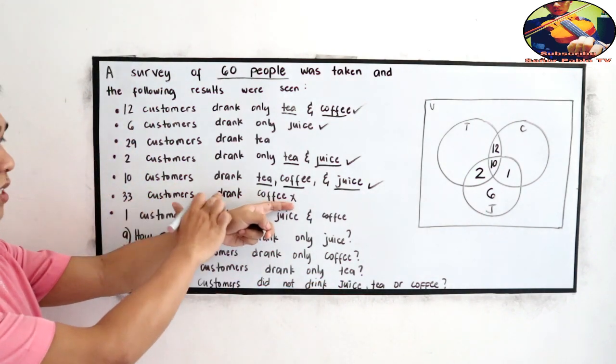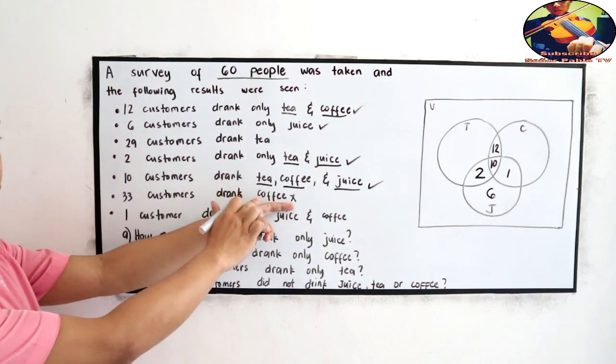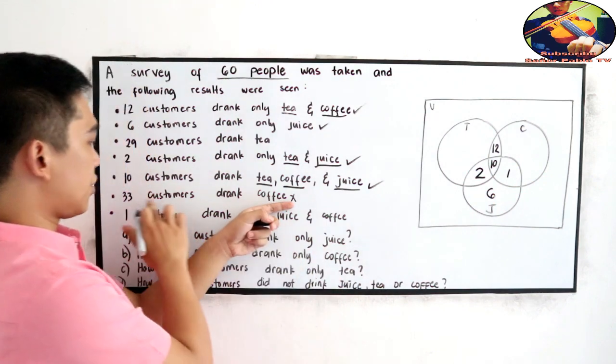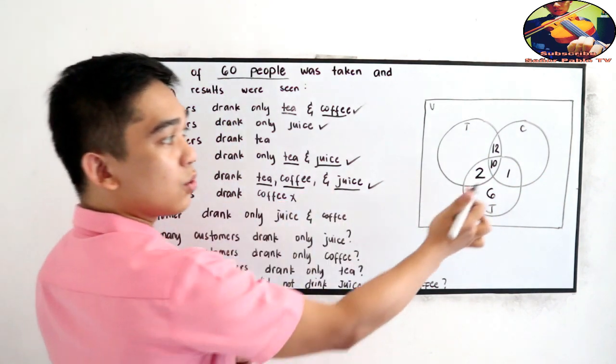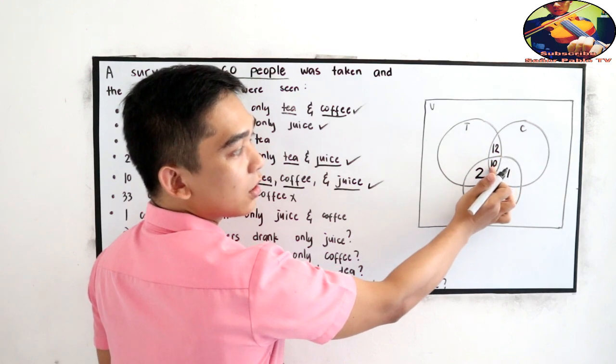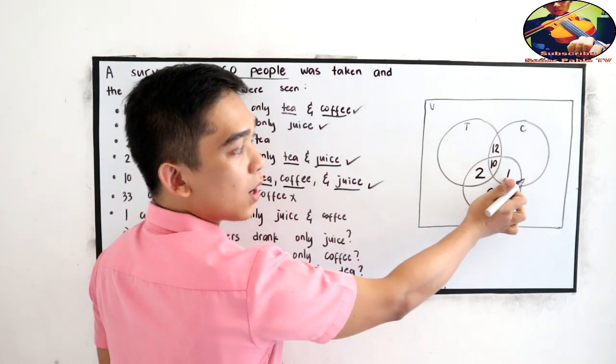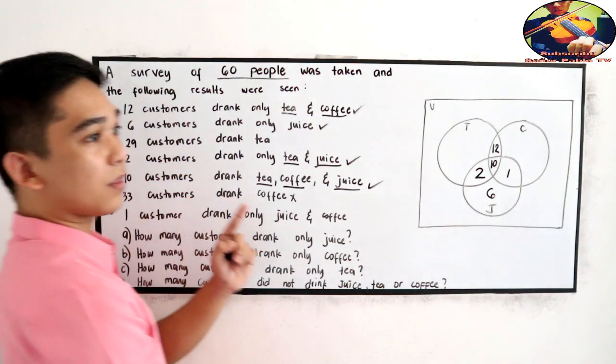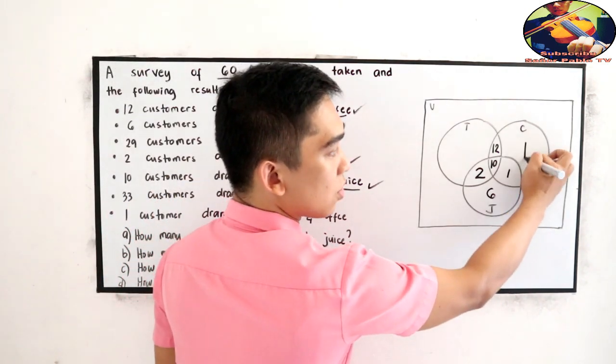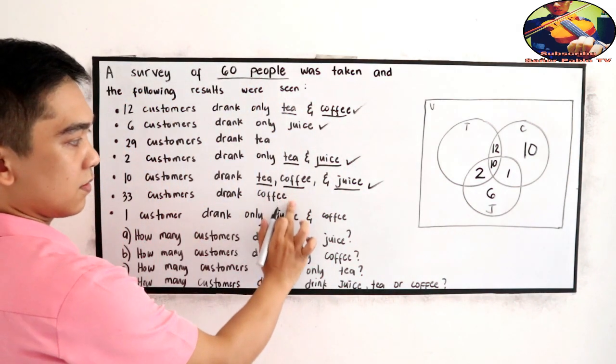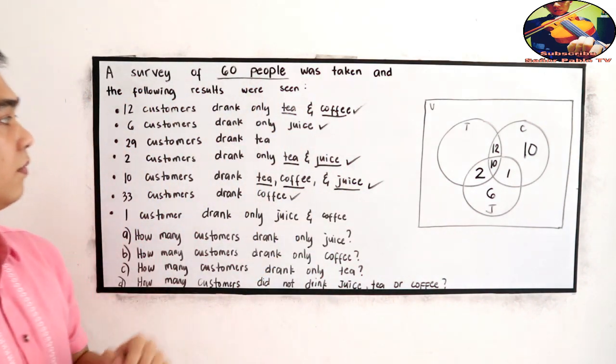33 customers drank coffee. So the total for coffee is 33. So we need to less intersections. 12 plus 10, 22 plus 1, so 23. 33 minus 23, so this is 10. So we're done here.